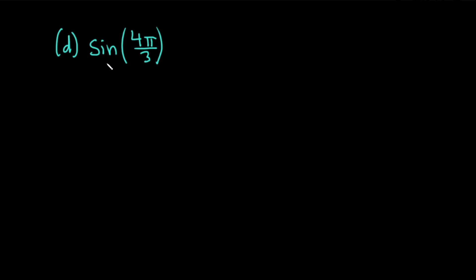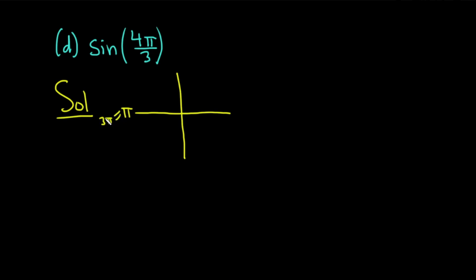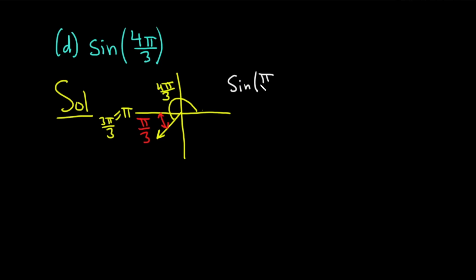Let's finish up with part D. We have to evaluate the sine of 4 pi over 3. As before, we start by drawing a rough sketch. Recall pi is the same as 3 pi over 3, so 4 pi over 3 is just a little bit bigger — it's going to be down here in quadrant 3. The reference number is the minimum distance between the x-axis and the terminal side of our angle, which is pi over 3. The sine of pi over 3 is the square root of 3 over 2. Because sine is the y-coordinate on the unit circle and sine is negative here, the sine of 4 pi over 3 is going to be negative square root of 3 over 2.